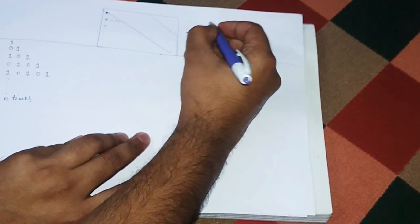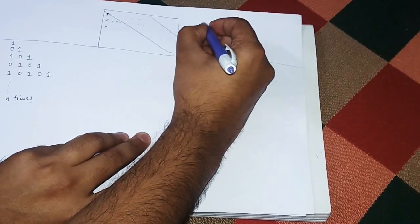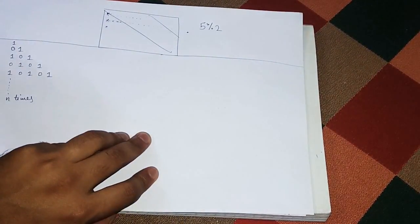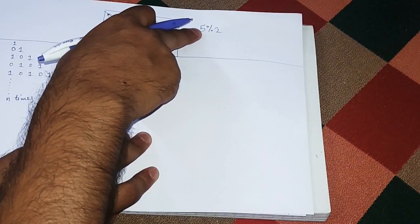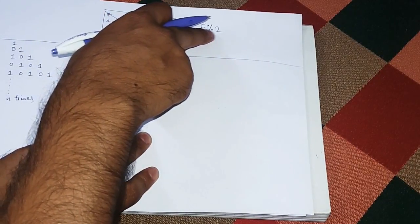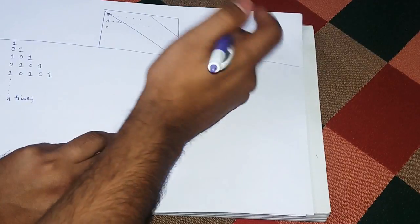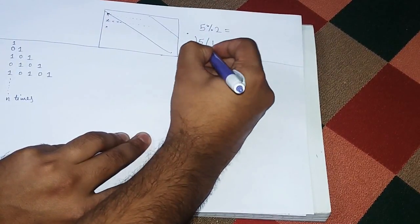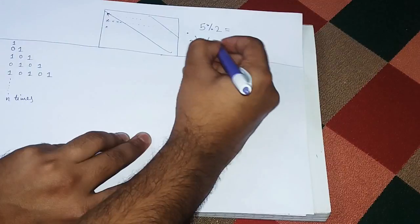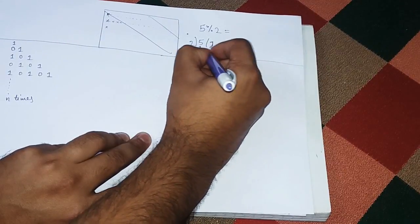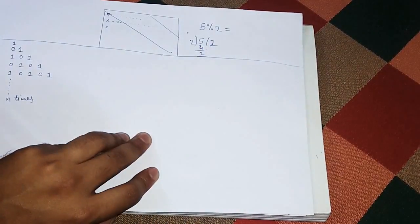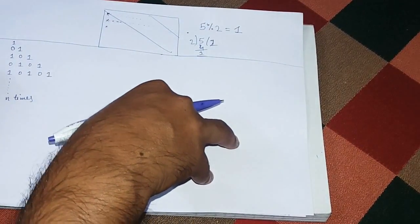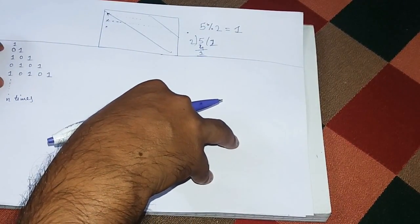The mod operator returns the remainder. For example, 5 mod 2 — if we divide 5 by 2, the remainder is 1, so it will return 1. We can use this to easily print the pattern. As we start writing the program, we will trace out the logic accordingly.